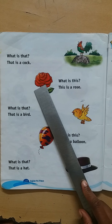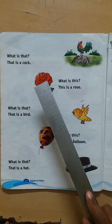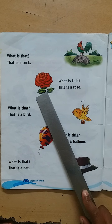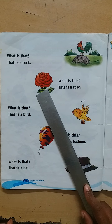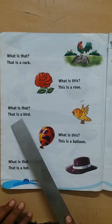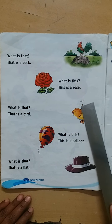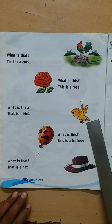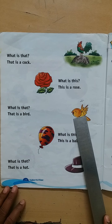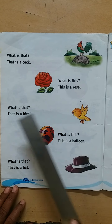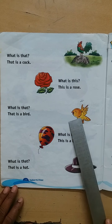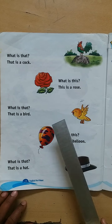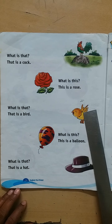What is this, children? This is a rose. Now see this picture — here is a lovely bird. What is that, children? That is a bird. What is that? That is a bird. Our question is 'What is that?' and our answer will be 'That is a bird.'